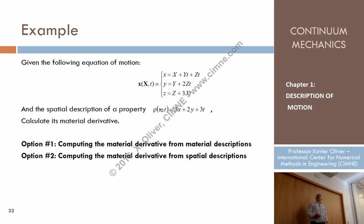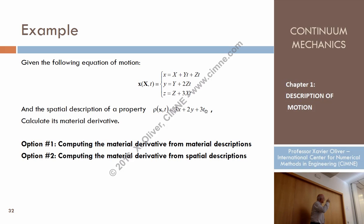What happens if I differentiate that with respect to t? What is the derivative of this expression with respect to t? Three — three constant everywhere, not depending on space and time, is the material derivative of the density.